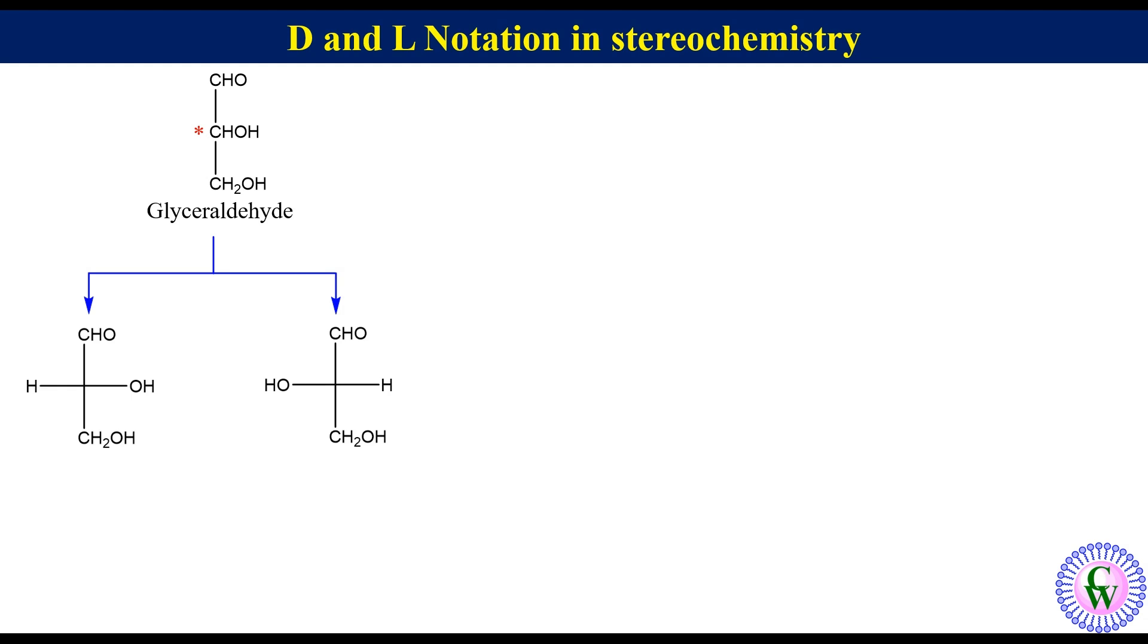We can see that in one isomer OH on the chiral carbon is on the right while in the other it is left. The isomer having OH on the right is D glyceraldehyde while that having OH on the left is L glyceraldehyde.